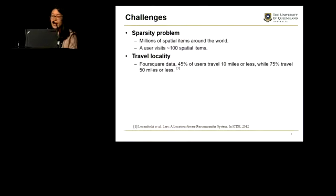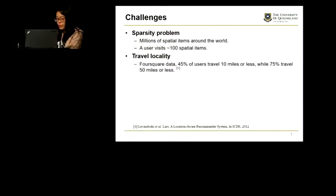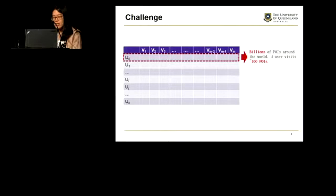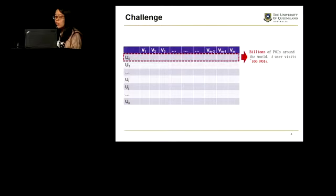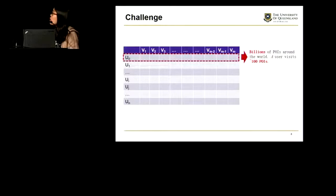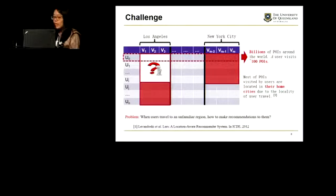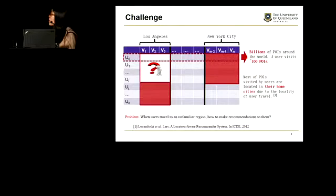The first two identified challenges in this problem are the sparsity problem and the travel locality problem. Let's take a look at the two challenges from the data level. Here is the user-spatial-item matrix. As there are billions of POIs around the world, but a user just visits around 100 spatial items, this matrix is already very sparse. According to a survey in ICDE 2012, most of the spatial items visited by a user are located in their home cities due to the locality of user travel.